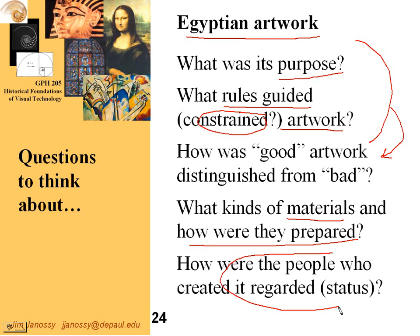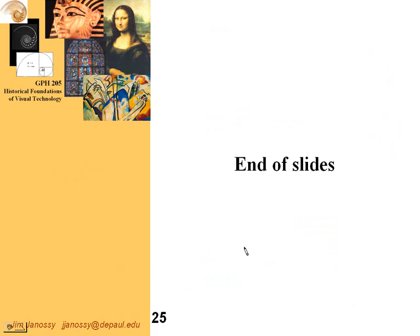What is the status of the people who created the artworks? This almost universally in older societies is totally different than what we think about today — an artist expressing some emotion or expressing something by creating a work of art. People who created these things in the ancient world were tradespeople. They were craftsmen. They worked with their hands. They were not intellectuals, as we might consider an artist to be — a poet who works in a different medium than words. That was not the concept in the ancient world. And that's the end of the slides for chapter 2.